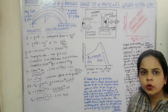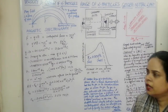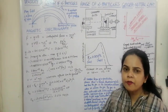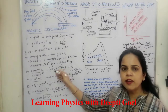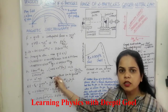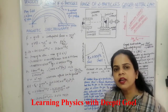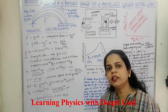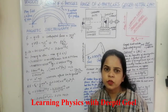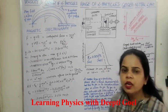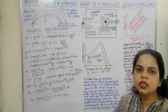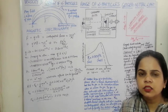Using the magnetic spectrograph, we have calculated both the velocity and the energy of the alpha particle.